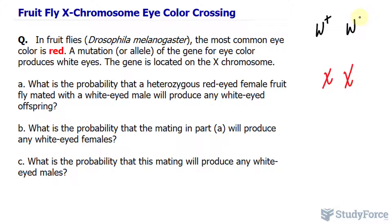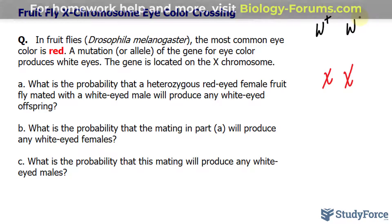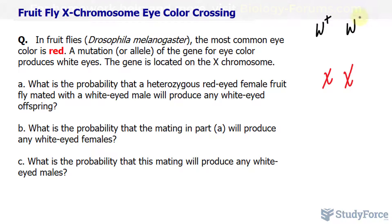We haven't been told directly which allele is dominant over the other. But what we do know from reading the question is that if a fly is heterozygous — meaning it has inherited one of each allele — then it has red eyes. From this, we can determine that the allele for white eyes is recessive to the red eye allele, and the only way for a female to have white eyes is if it inherited the white eye allele from both parents.